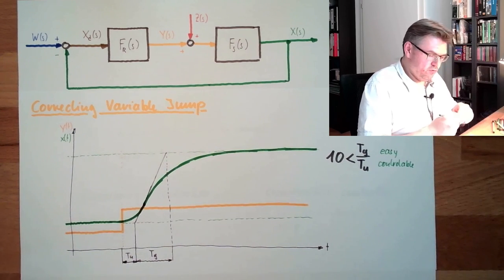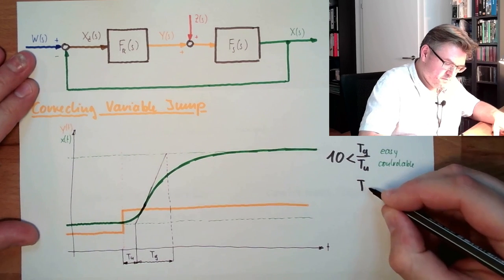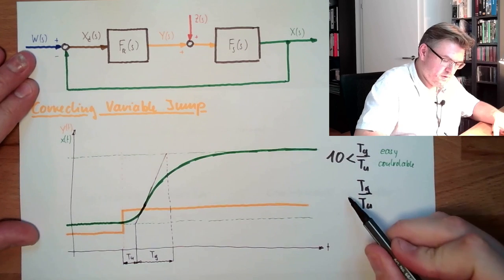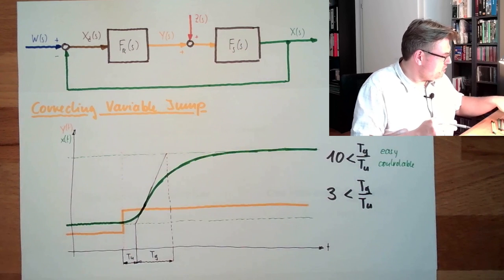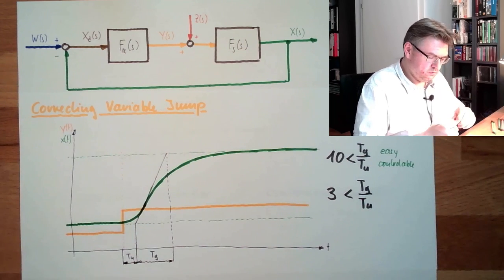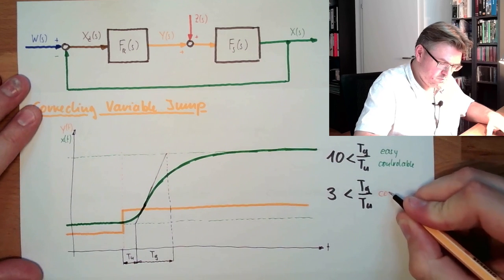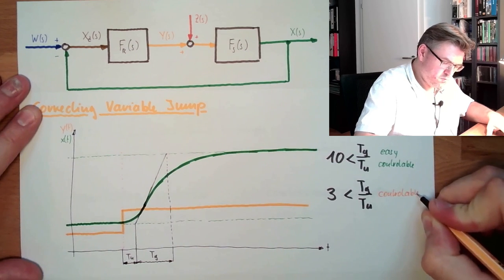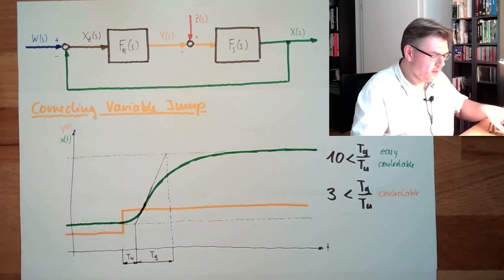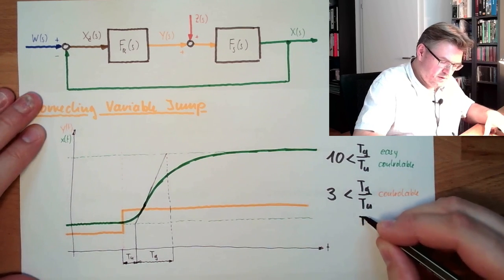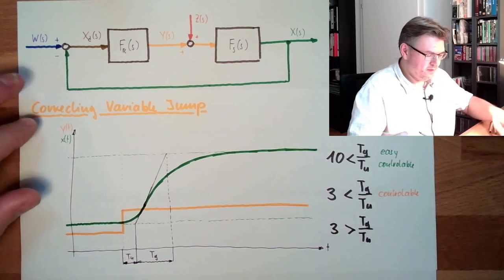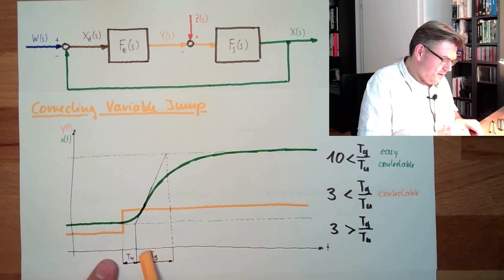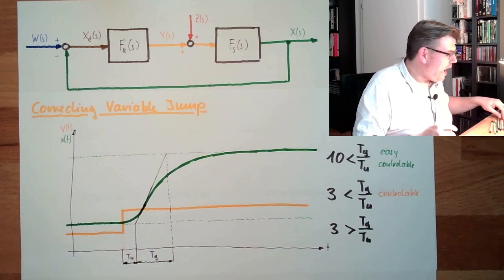If our ratio Tg compared to Tu is bigger than 3 but smaller than 10, we usually call this controllable. And if Tg compared to Tu is smaller than 3 — if Tg is only less than three times longer than Tu — this is called hardly controllable.